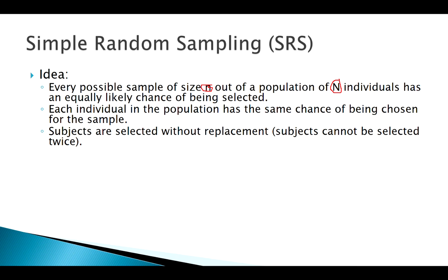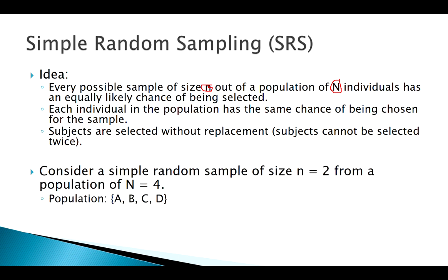A simple random sample is where every single person in that population has the same chance of being picked for our sample. I know I need a certain sample size, every individual has the same chance of being picked, and then I randomly choose one of those samples.